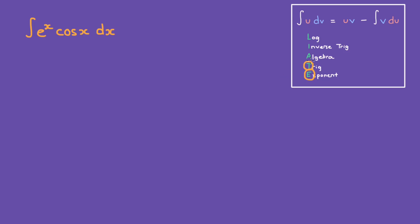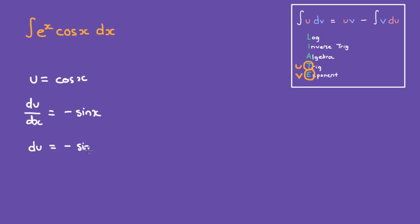So whichever one is at the top will be the u, and whichever one is below will be the v. So u is equal to cosine of x. What is the derivative of cosine? That's negative sine of x. And then multiplying both sides by dx, we get du is equal to negative sine of x times dx.